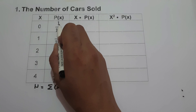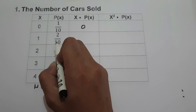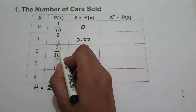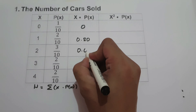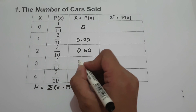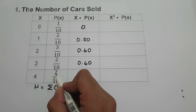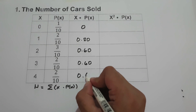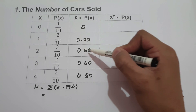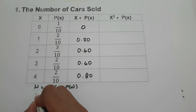Multiplying x and p(x): 0 times 1 divided by 10 is 0. Then 1 times 2 divided by 10 is 0.20. Then 2 times 3 divided by 10 is 0.60. Then 3 times 2 divided by 10 is 0.60. And 4 times 2 divided by 10 is 0.80. Adding these values: 0 plus 0.20 plus 0.60 plus 0.60 plus 0.80 gives us a mean of 2.2.